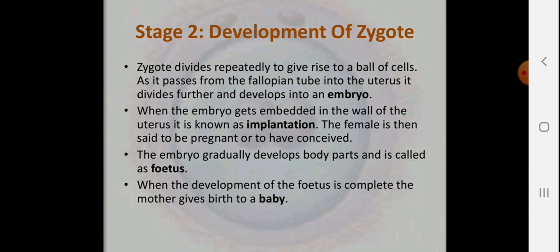Stage 2 is the development of the zygote. The zygote divides repeatedly to give rise to a ball of cells. It divides mitotically and meiotically to form an embryo, which implants in the wall of the uterus — the endometrium — in a process called implantation. Once embedded, the female is said to be pregnant. The embryo gradually develops body parts and becomes a fetus, which grows for nine months or forty weeks to become a fully developed baby.